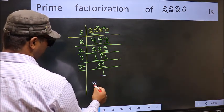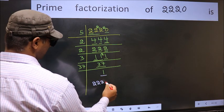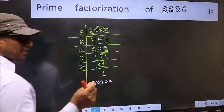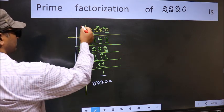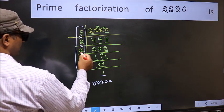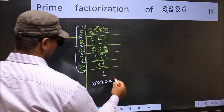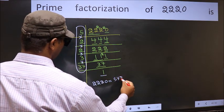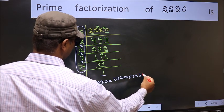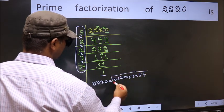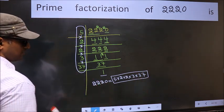The prime factorization of 2220 is the product of these numbers. That is 5 into 2 into 2 into 2 into 3 into 37. This is the prime factorization of 2220.